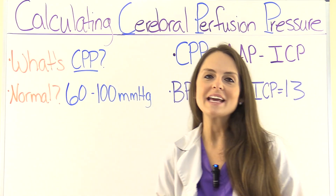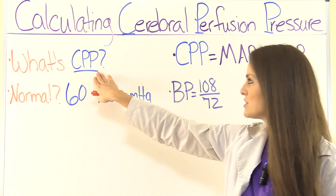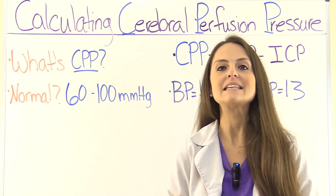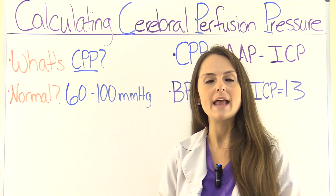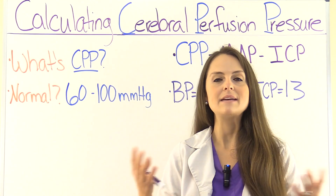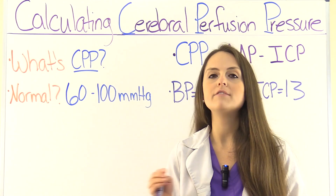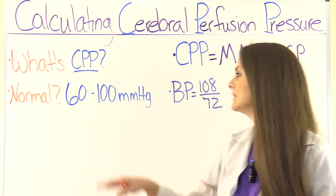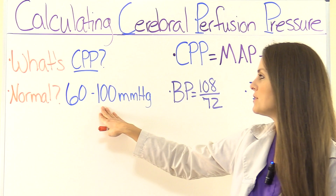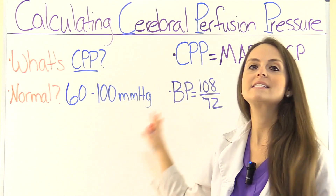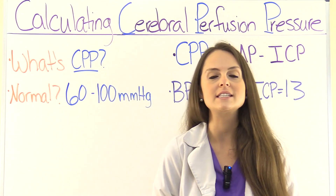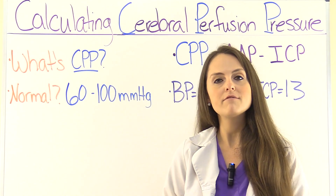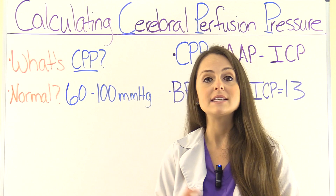First, let's talk about what is cerebral perfusion pressure. It is the amount of pressure required to get a sufficient amount of blood to the brain — hence, it maintains cerebral blood flow. We need a proper perfusion pressure of at least 60 to 100 millimeters of mercury. This is the normal range where we want our patients, because this helps us maintain life and maintain proper blood flow to the brain so we don't have ischemia.